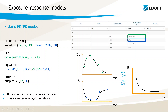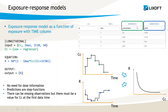Developing an exposure-response model with exposure on the x-axis directly in Monolix is possible. In this case, the exposure should be encoded as a separate column in the dataset, used as a regressor, while only the response is used as observation. Moreover, the time column should not be used.